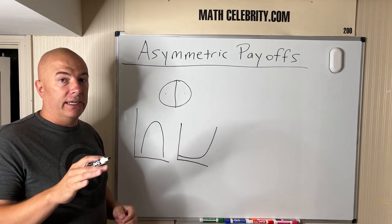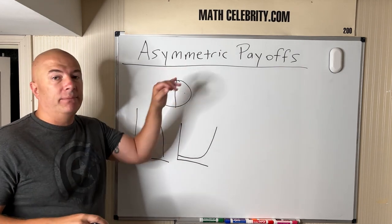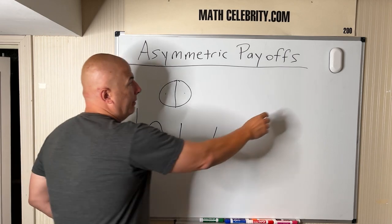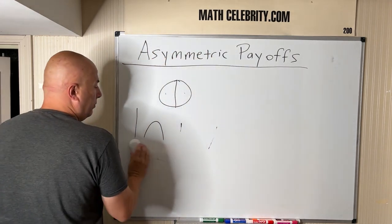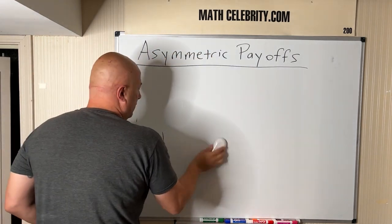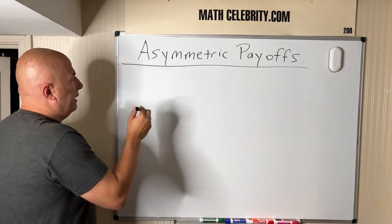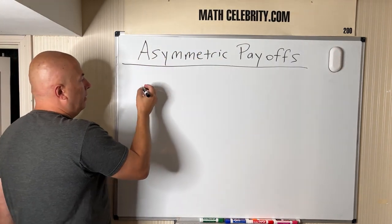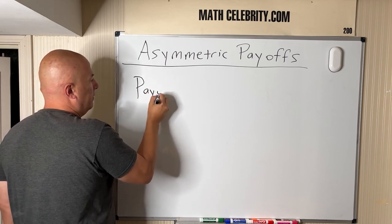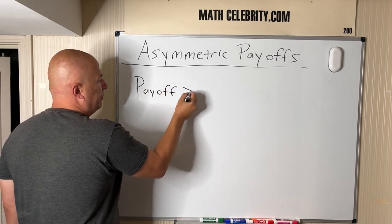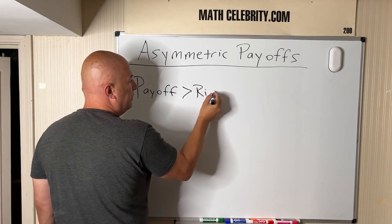So asymmetric, what I'm getting at, is are there things in your life you can target or go after that have asymmetric payoffs? I'm going to erase this graph because I need a little room to walk through this concept here. If we look at asymmetric, we want something where the payoff